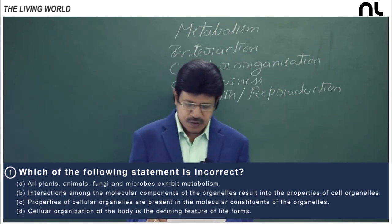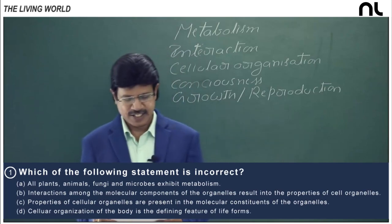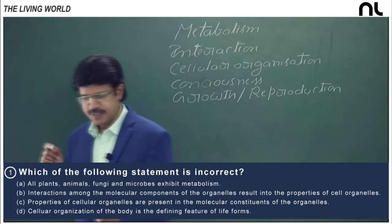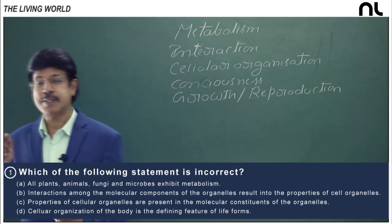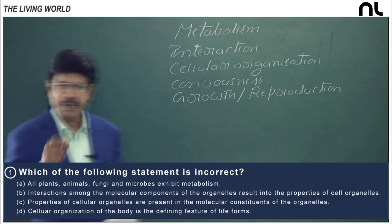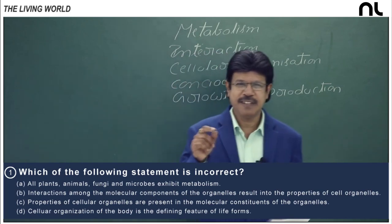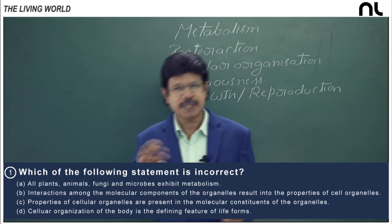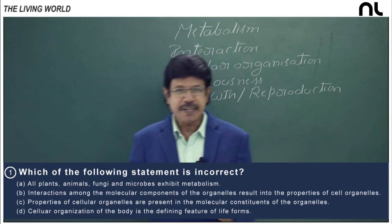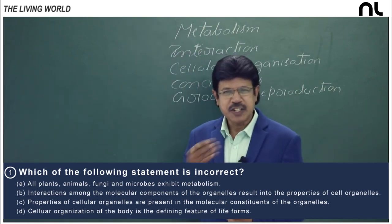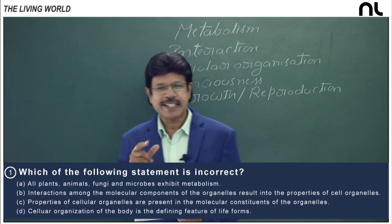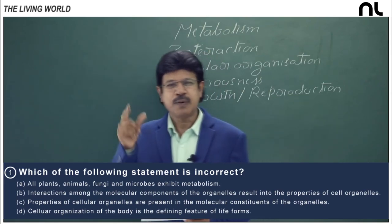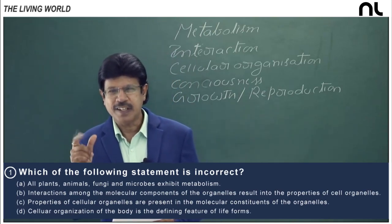In the first question: which of the following statements is incorrect? In option 1, all plants, animals, fungi, and microbes exhibit metabolism. Metabolism is undoubtedly a defining property of the living, because biomolecules are continuously converted into other biomolecules — such making and breaking occur continuously. So metabolism is the characteristic feature of living organisms.